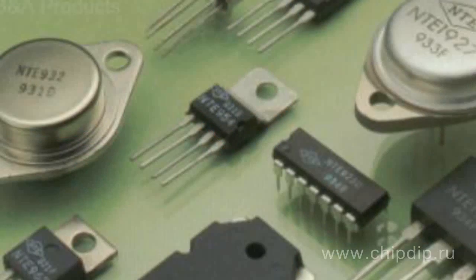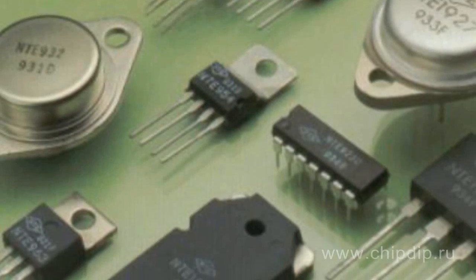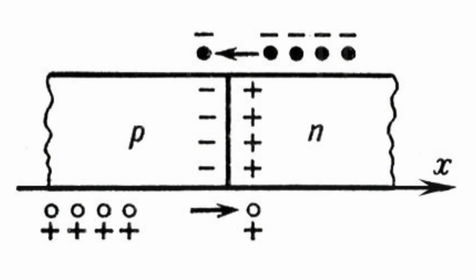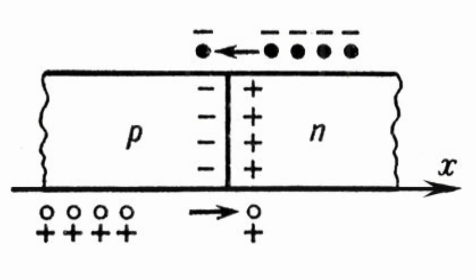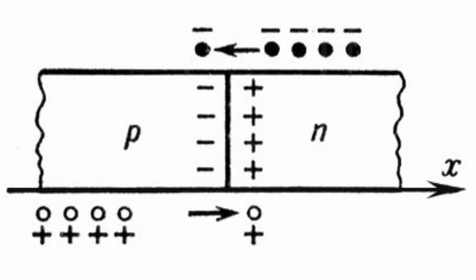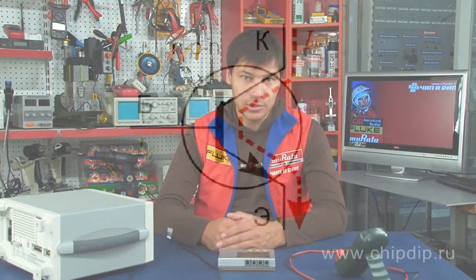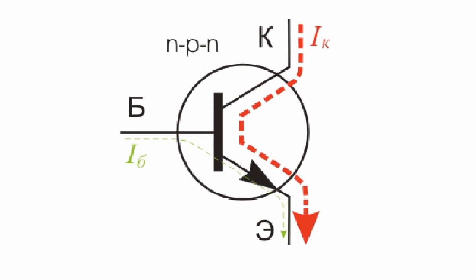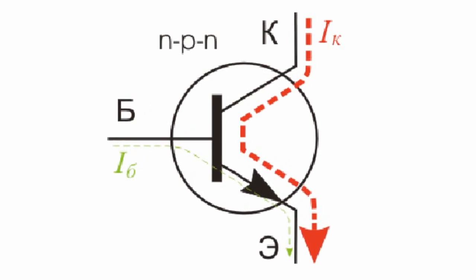Operation of conventional transistors in chips is based on alternation of accumulation and dumping of electrons. One of these states corresponds to binary 1 or 0. Each of them requires time for transition, which determines the switch delay.